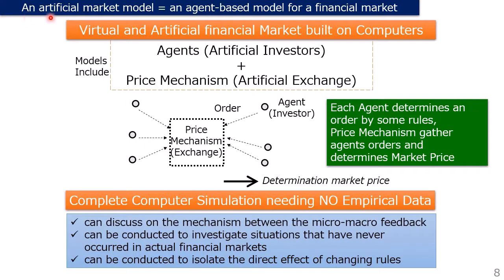An artificial market model — an agent-based model for a financial market — is where virtual financial markets are built on computers. Models include agents representing actual investors, and price mechanisms representing actual exchanges. Each agent determines an order by some rules. Price mechanisms judge agents' orders and determine market price. This is a complete computer simulation needing no empirical data. An artificial market model can discuss the mechanisms of micro-macro feedback, can investigate situations that have never occurred in actual financial markets, and can isolate the direct effect of changing rules.